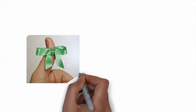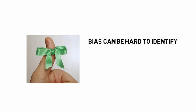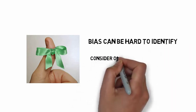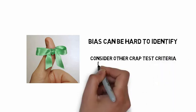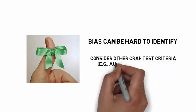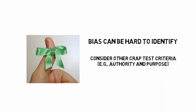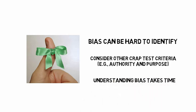So remember that bias can be hard to identify. You may have to think about other CRAAP test criteria, such as authority, in addition to purpose, to determine if information from a given source is strongly biased or not. And your investigation will take time.